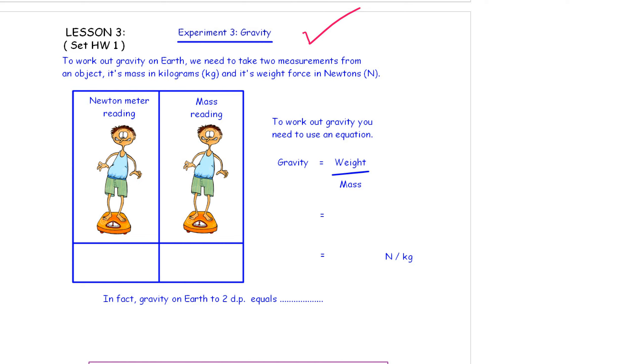To work out gravity on Earth, you need to take two measurements from an object, its mass and its weight force. Mass is in kilograms. We've done that all the time. If ever you go on your measuring scales, you get a mass reading. Now, my mass reading, this is Mr. Ruddy, is 70 kilograms.